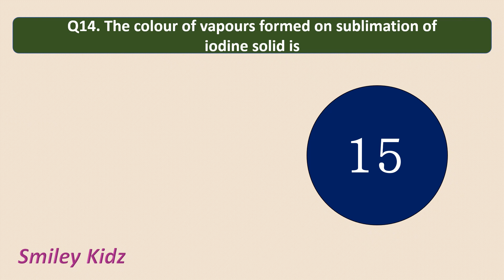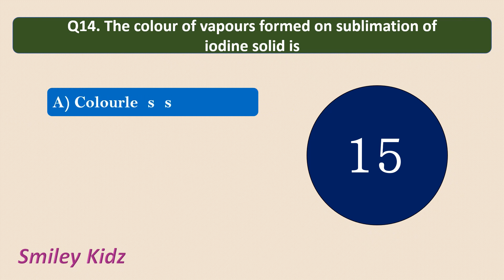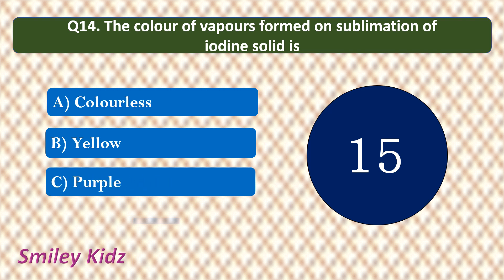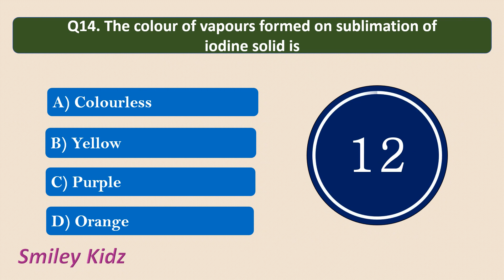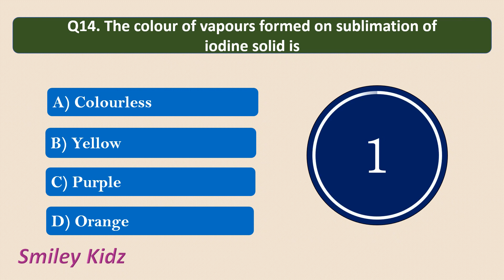Question number 14. The color of vapors formed on sublimation of iodine solid is? Your options are Colorless, Yellow, Purple, or Orange. Your time starts now. Your time is up and the correct answer is Purple. Sublimation is converting solid directly to gas without undergoing a liquid state. When sublimation of iodine takes place, the vapors will be in purple color.